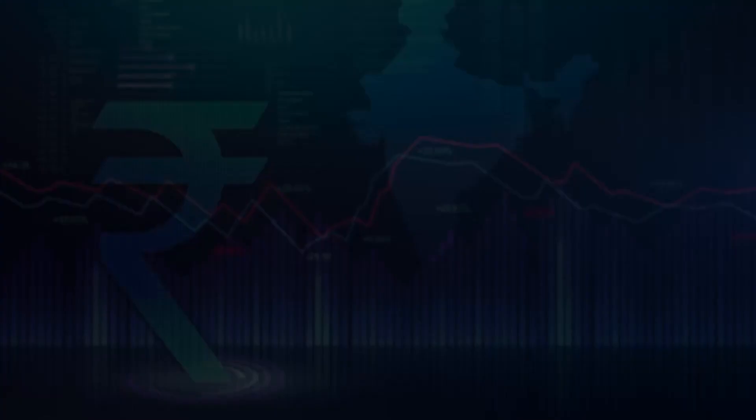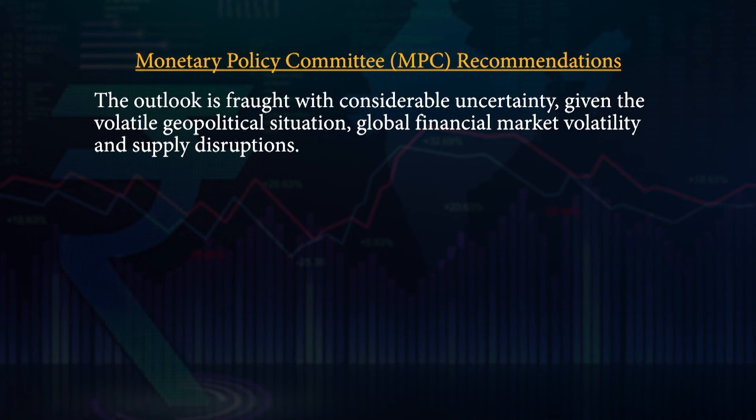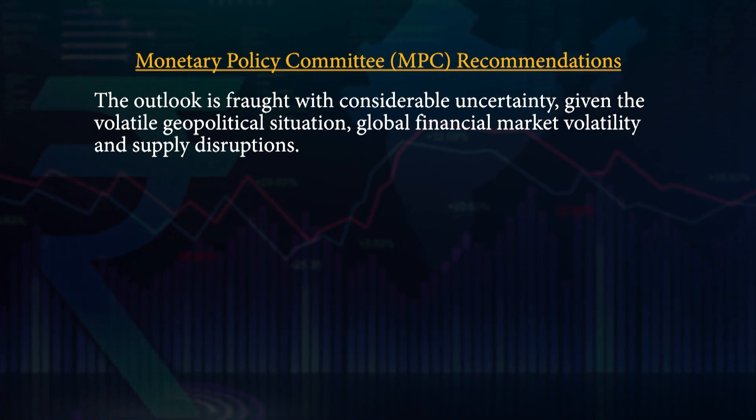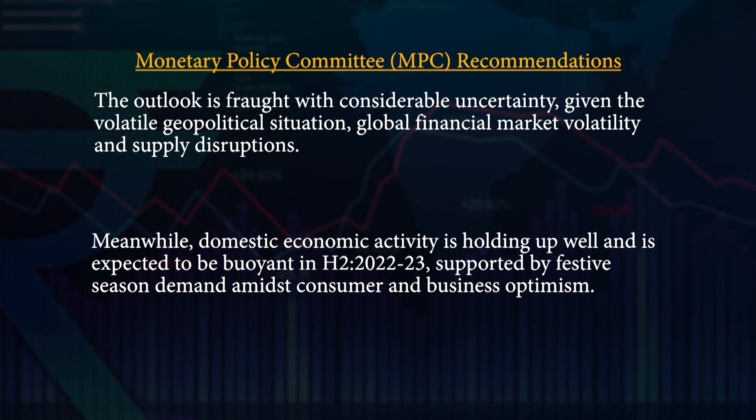These decisions were in consonance with the objective of achieving the medium-term target for consumer price index inflation of 4% within a band of plus or minus 2%, while supporting growth. In the MPC's view, inflation is likely to be above the upper tolerance level of 6% through the first three quarters of 2022-23, with core inflation remaining high. The outlook is fraught with considerable uncertainty given the volatile geopolitical situation, global financial market volatility, and supply disruptions being experienced due to the Russia-Ukraine conflict. The MPC was also of the view that further calibrated monetary policy action is warranted to keep inflation expectations anchored, restrain the broadening of price pressure, and preempt any second-round effects.